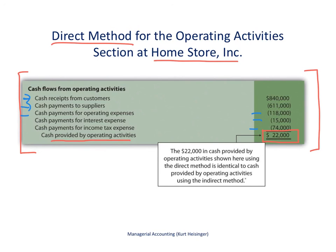In the indirect method, we took net income and made a bunch of adjustments to get from an accrual basis to a cash basis. In this method, we do that to each individual revenue and expense account to get from an accrual basis to a cash basis. The ultimate end result is that we have $22,000 in cash provided by operating activities — that is the cash that Homestore Inc. brought in for the year related to their day-to-day operations.